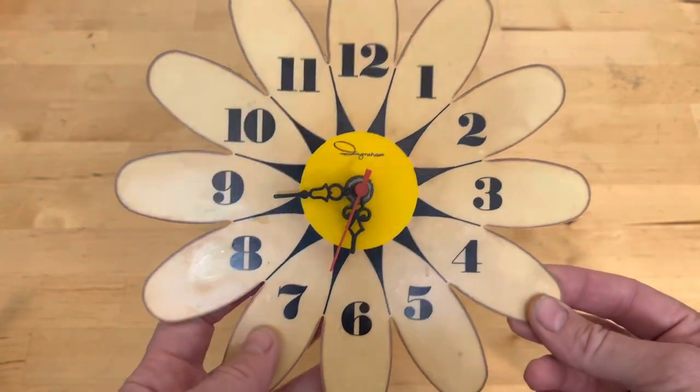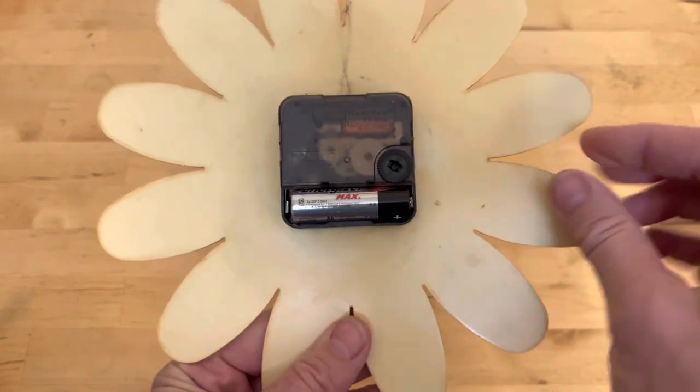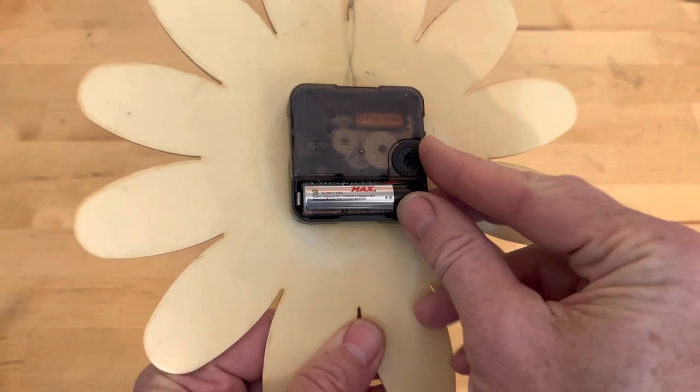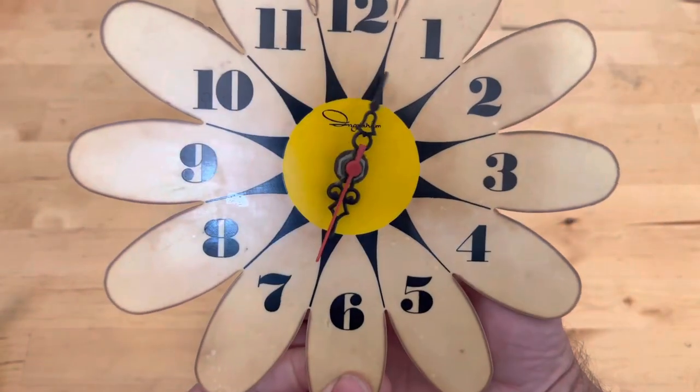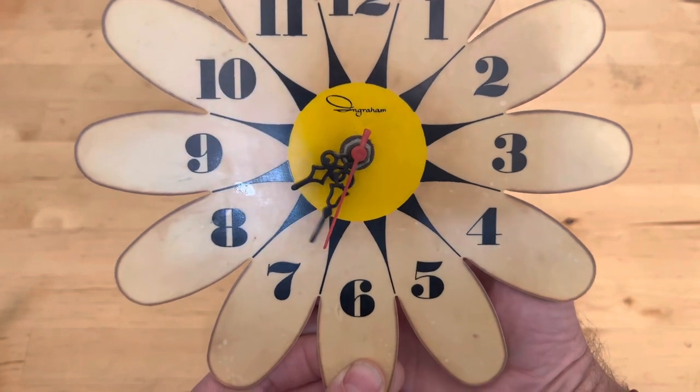When you want to change the time on your wall clock you should see a clock unit like this and it's got a little wheel on it. That wheel if you turn it counterclockwise will change the time on your clock by moving it forwards. So you can zip it through the hours forwards.